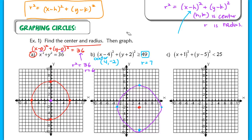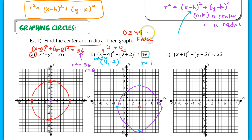We're going to test a point, and that point will always be the center — it's the easiest to test. If you plug in 4 for x and negative 2 for y, you get 0 plus 0. This says 0 is greater than or equal to 49, which is clearly false. So the points on the inside of the circle do not satisfy the inequality, meaning we shade on the outside.